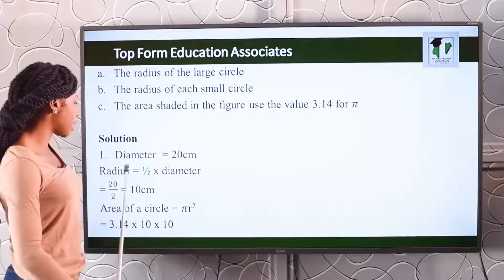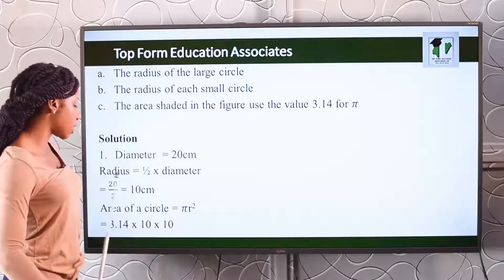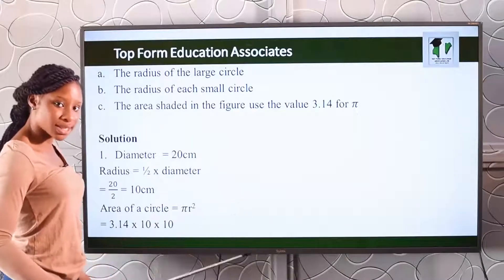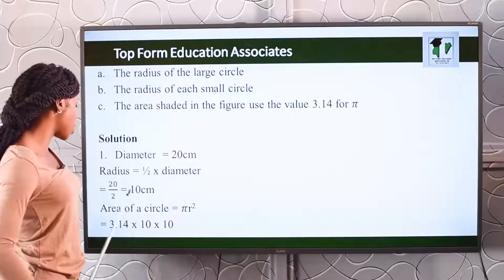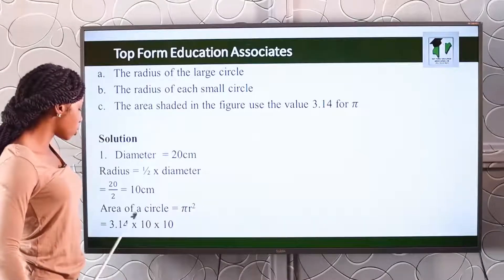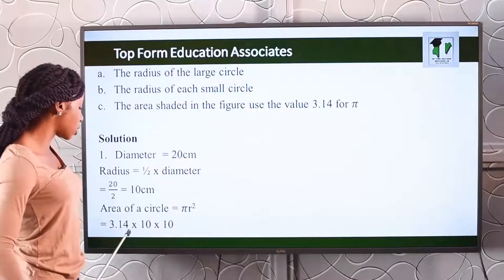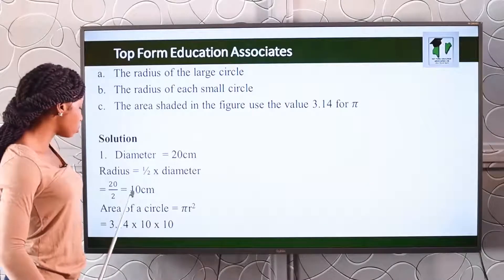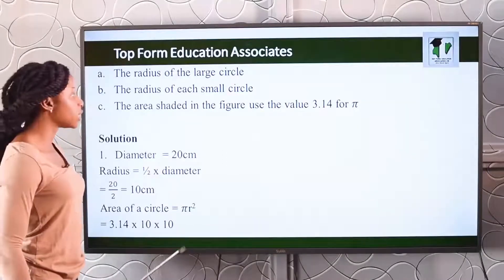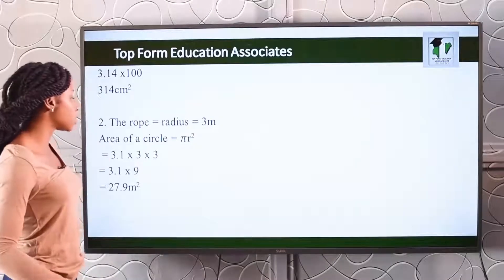For the first question, we are given a diameter and asked to find the area of the circle. We first find the radius: radius equals diameter over 2, which is 20 over 2, giving us a radius of 10 centimeters. Using the formula area = πr², with pi = 3.14, we get 3.14 times 10 times 10. The area of the given circle is 314 centimeters squared.